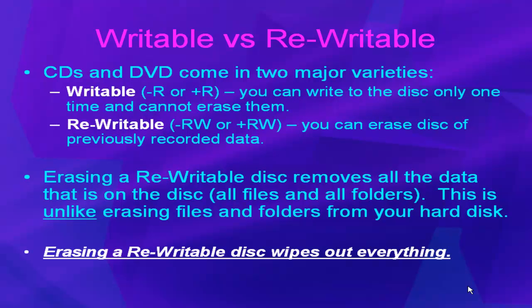Before we get started, there are a few things you need to be aware of. First, CDs and DVDs come in two major varieties: Writable and Rewritable. Writable CDs are usually designated with the minus R or the plus R designation, and with these CDs you can write information to the disc, but you cannot erase the information once it's been written.